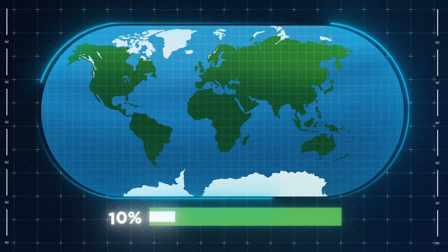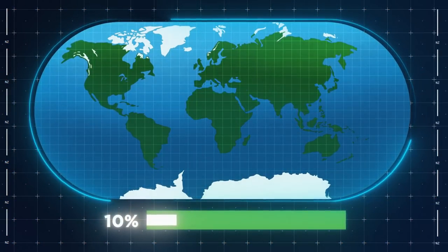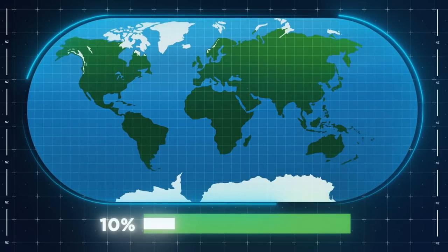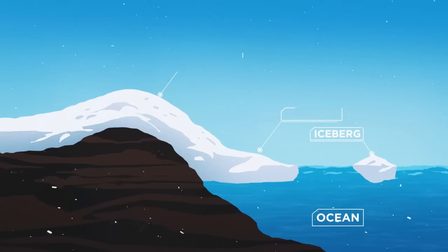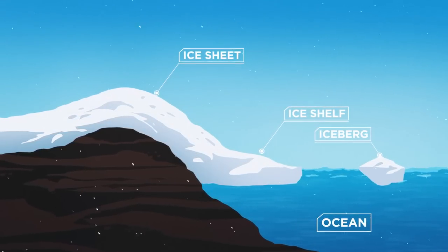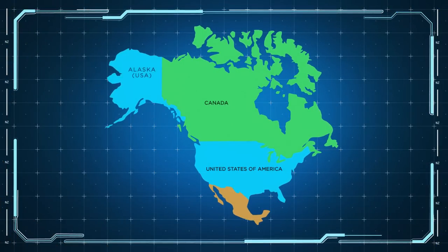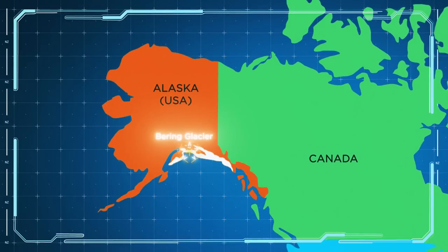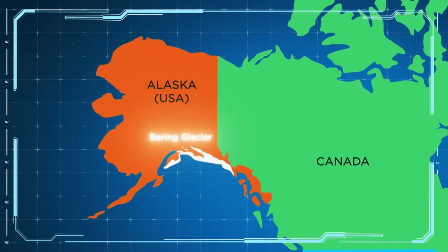Roughly 10% of the world's land area is covered in glacial ice, a mono-mineralic rock made of solid H2O. Masses of glacial ice form ice caps and ice sheets, as well as the largest glaciers on Earth. In North America, the largest frozen glacier is the Bering Glacier, which covers approximately 5,000 square kilometers of the Alaskan Peninsula.